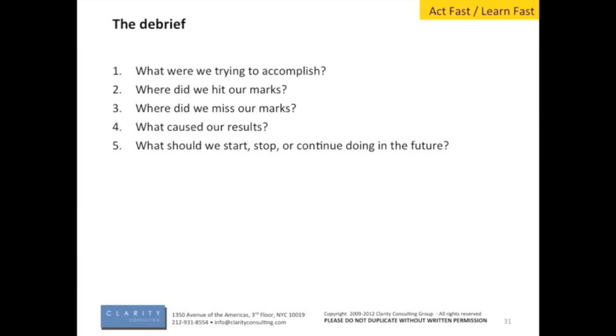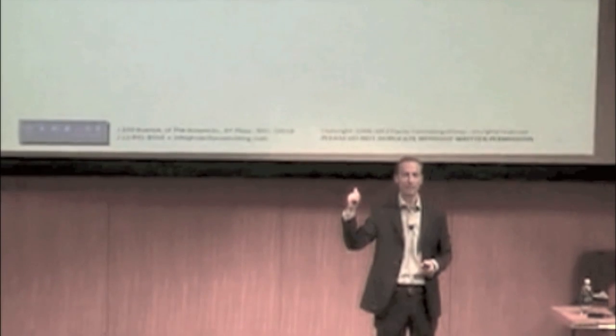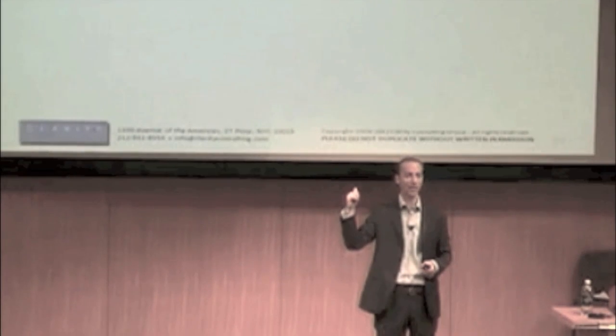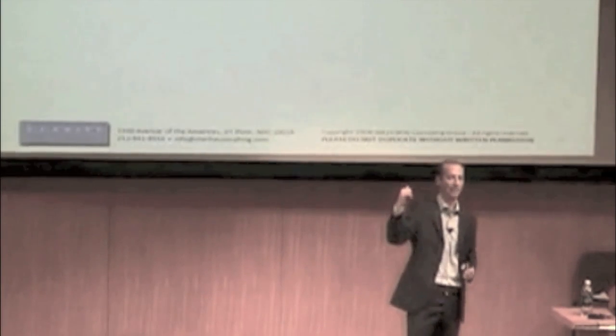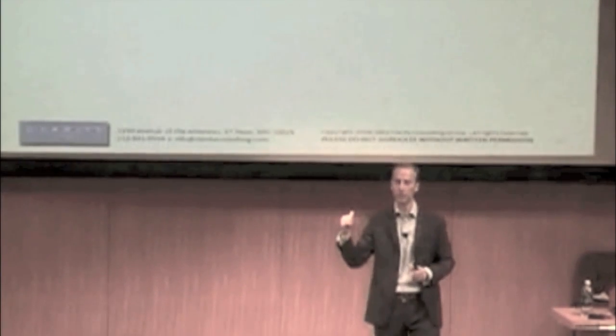So specifically, what actually had us do that? Let's go back and trace. What had us miss or hit our marks? What should we start, stop, or continue doing in the future? Probably not too similar from some of the things you've seen, some of the things you've done. The importance here is not knowing. The importance here is doing. What I call the knowing-doing gap. A lot of people know this. Very few do it.